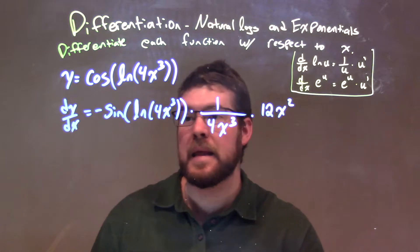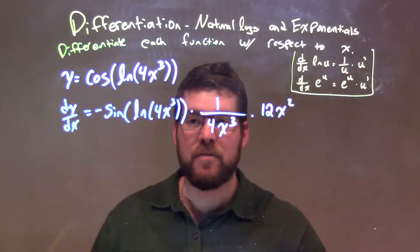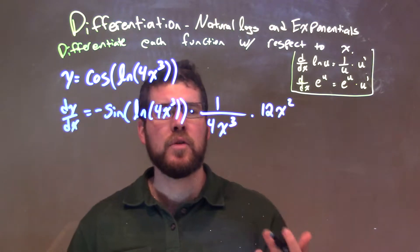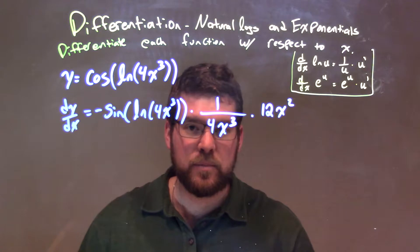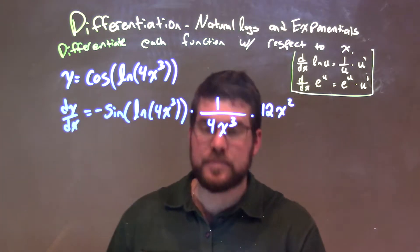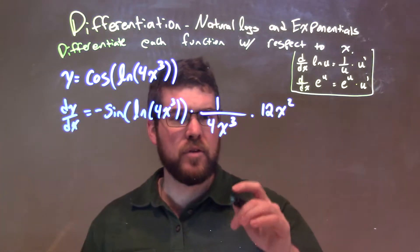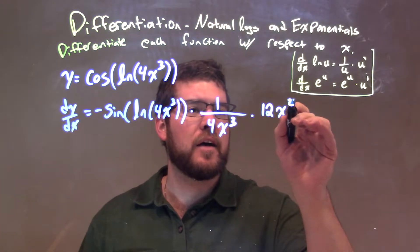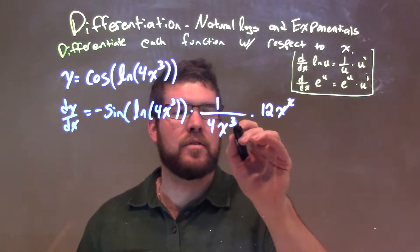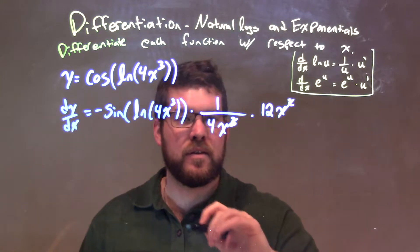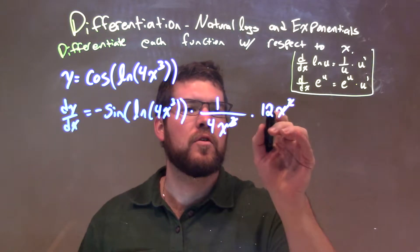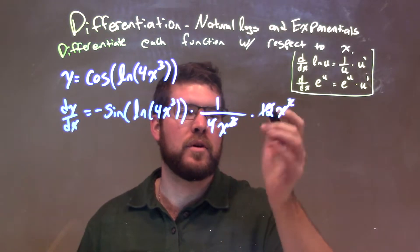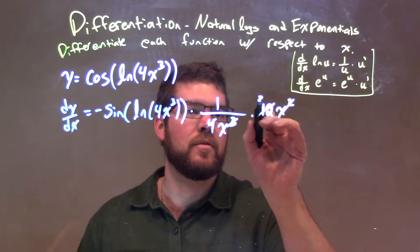We subtract the exponent by one, going from x to the third to x squared. Now we've taken the derivative, so we just need to simplify. x squared and x to the third: we can cancel that out and just have an x in the denominator. 12 and 4 simplify — 4 goes into 12 three times, so we have 3.